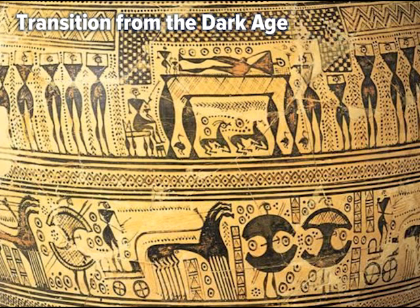The transition from the Dark Age, as usual, is visible in the surviving artwork most available to us — pottery doesn't rot, so the decorations on pottery are normally visible to us. What we find in the transition from the Dark Age is decorations that demonstrate both the principles of the Dark Age — geometric decorations — and representations of real-world events.